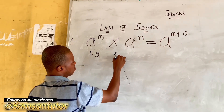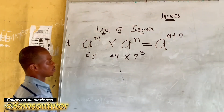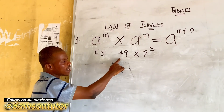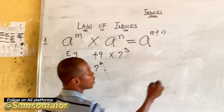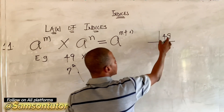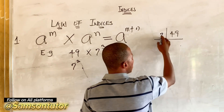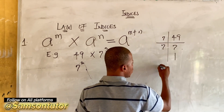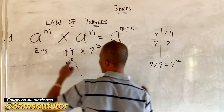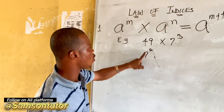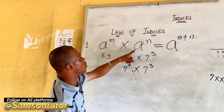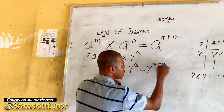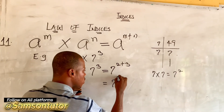Example: 49 times 7 raised to power 3. We need to express 49 with base 7. Seven can go into 49 seven times, and seven goes into seven once, so we divide twice — giving us 7 times 7, which is 7 raised to power 2. So 49 equals 7 raised to power 2.